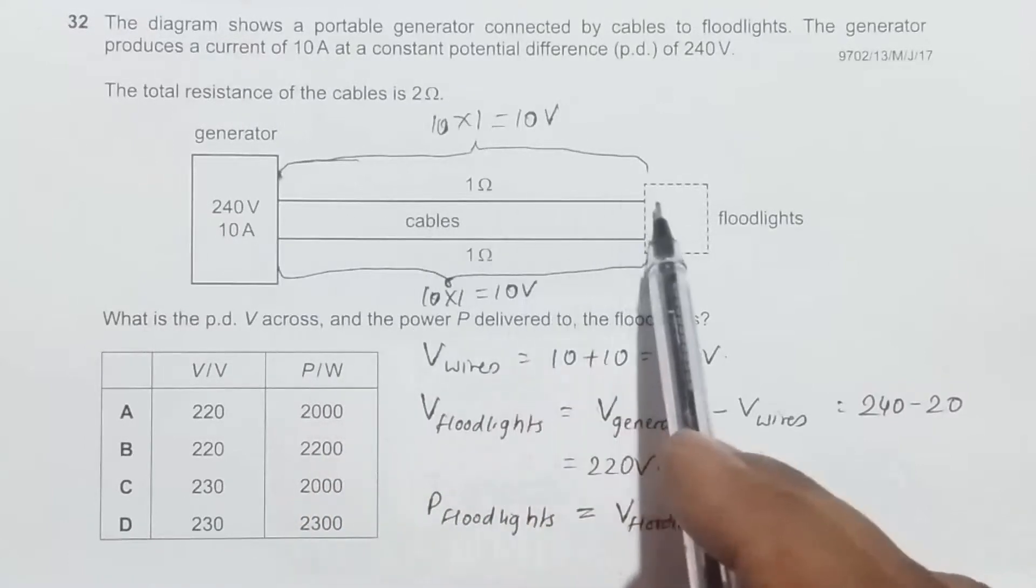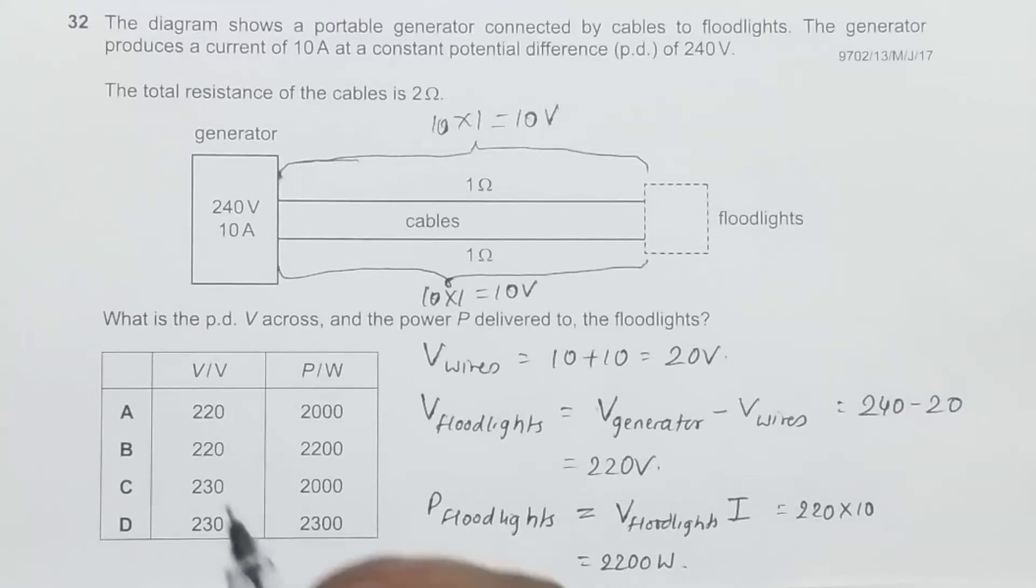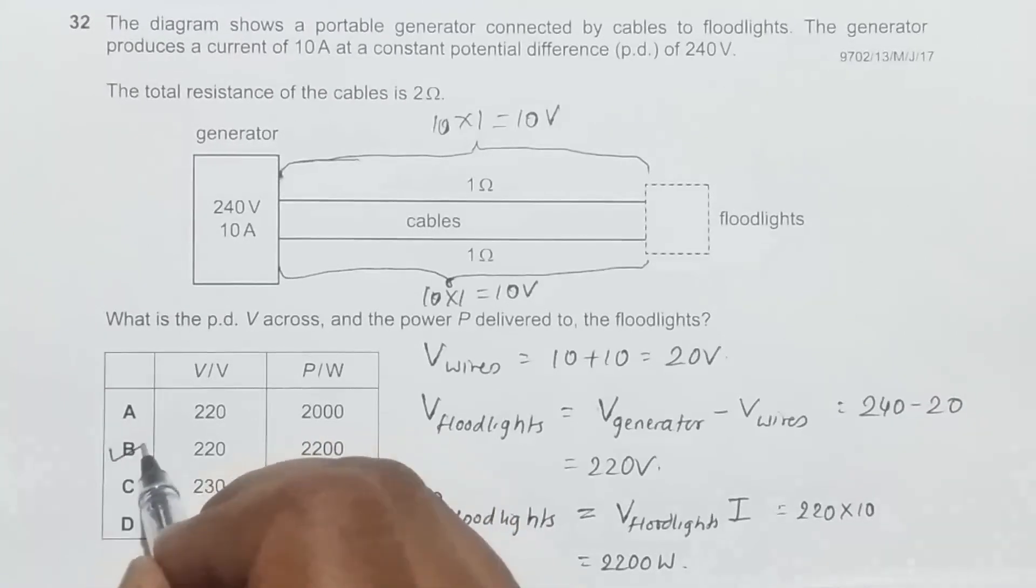So it equals 220 into 10 equals 2200 watts. The answer choice that seems to be correct is choice number B.